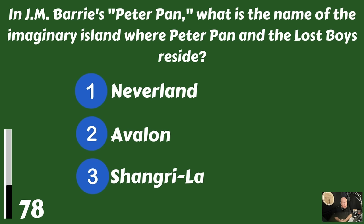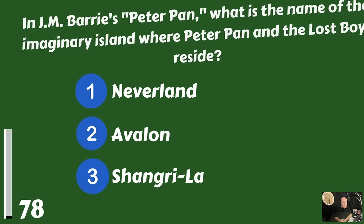In J.M. Barrie's Peter Pan, what is the name of the imaginary island where Peter Pan and the Lost Boys reside? Neverland, Avalon, or Shangri-La? That would be Neverland.